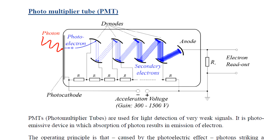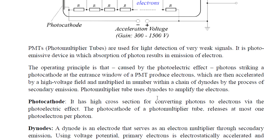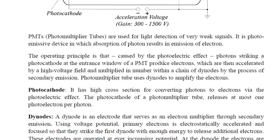The operating principle is based on the photoelectric effect. Photons striking a photocathode at the entrance window of a PMT produce electrons, which are then accelerated by a high voltage field and multiplied in number within a chain of dynodes by the process of secondary emission.